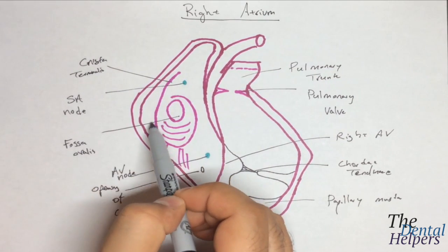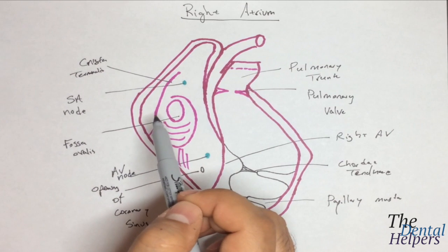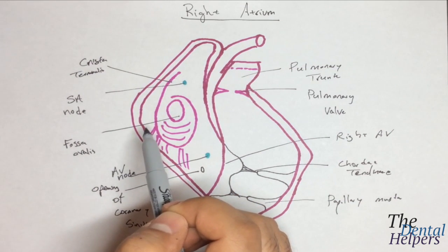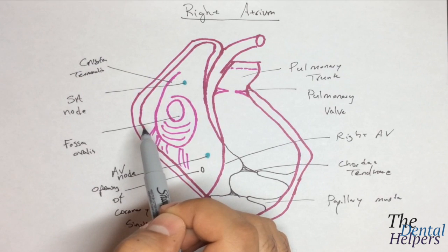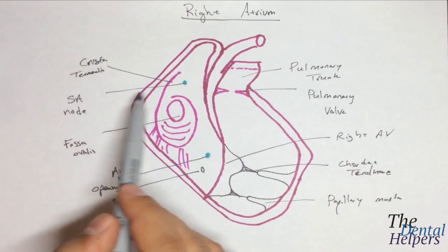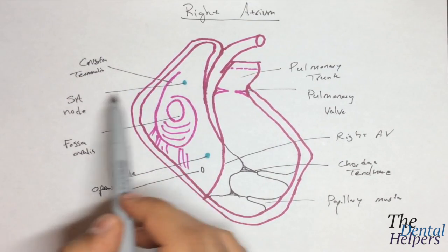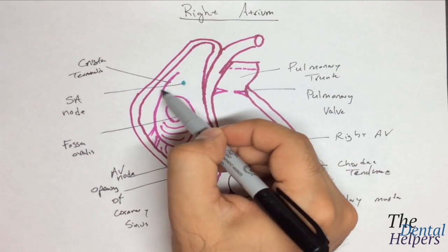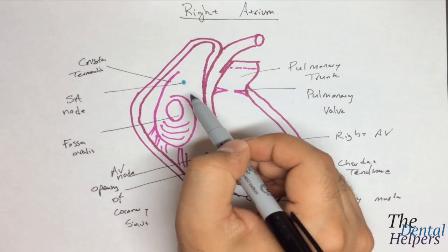This crista terminalis that we see flowing right down here is a muscular ridge that runs vertically in the atrium, separating its posterior smooth wall from the more anterior plane of musculi pectinati. The SA node, as I said, is the pacemaker of the heart, and it's located at the intersection of the crista terminalis that we see here and the entrance of the superior vena cava which is entering right here.